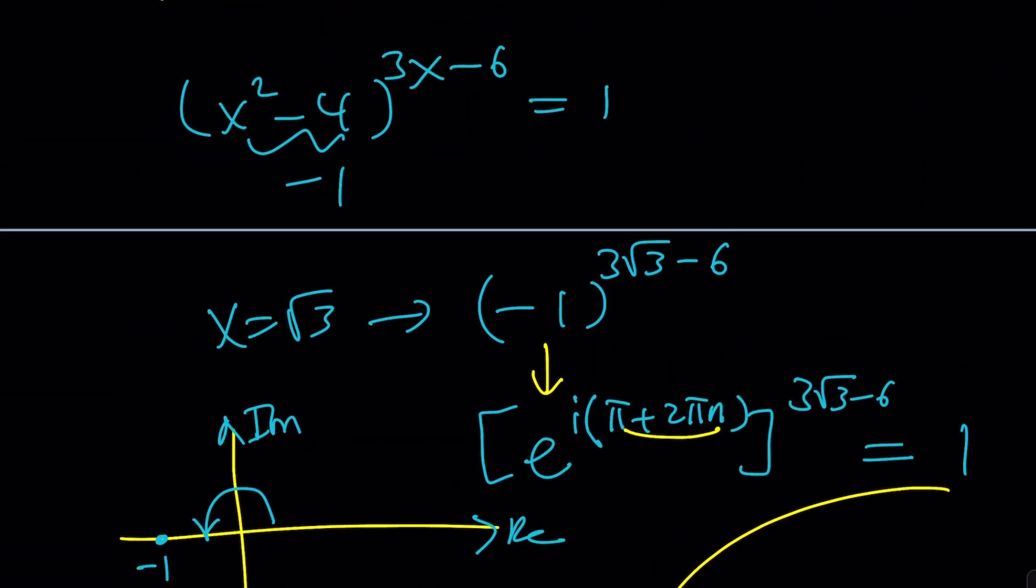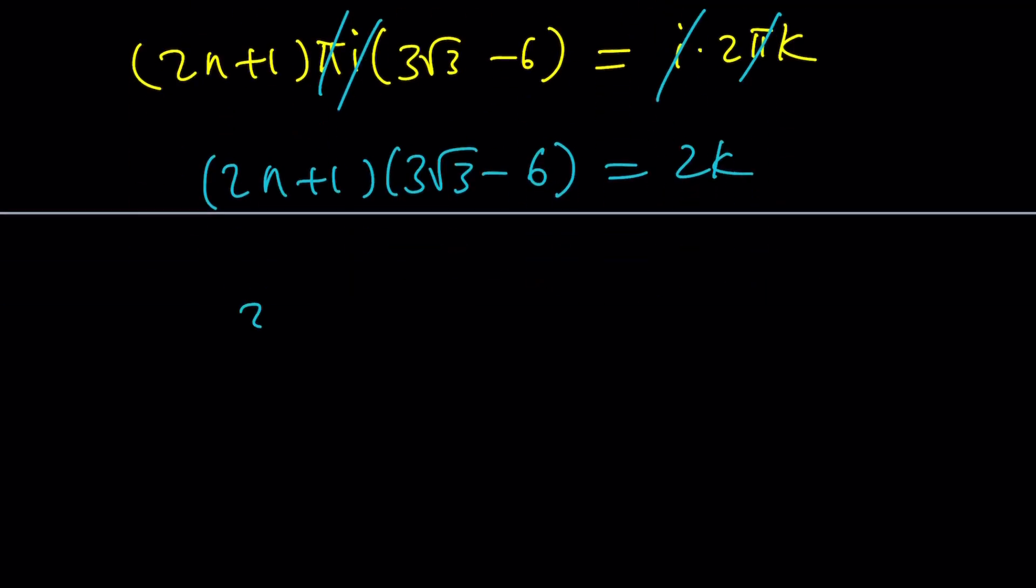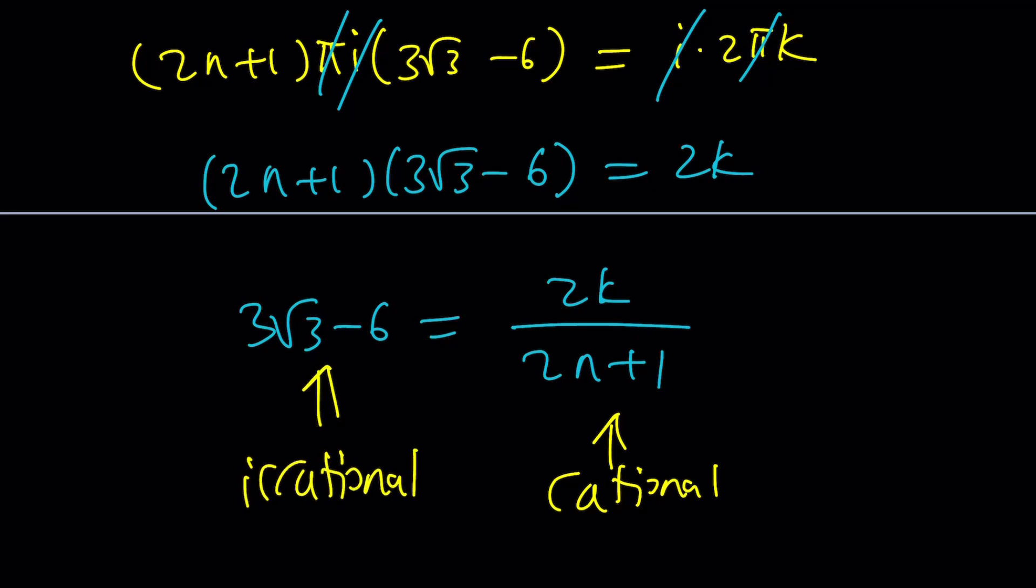Oh, so we were just checking if this can ever be 1. Yes. So this should check for integer values. At least if you can find one pair, we'll be good to go. So we kind of got something like this. An odd integer multiplied by an irrational number should give us an even integer. And as we know, this is not true because if you think about it, the right-hand side is a rational number, but the left-hand side is irrational.